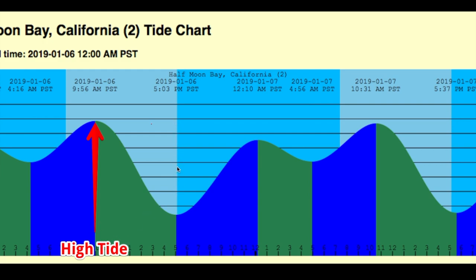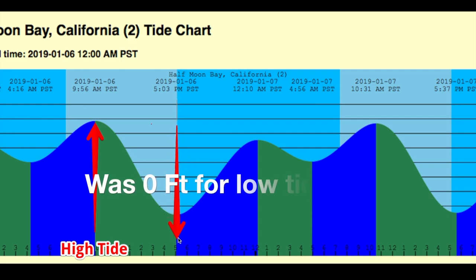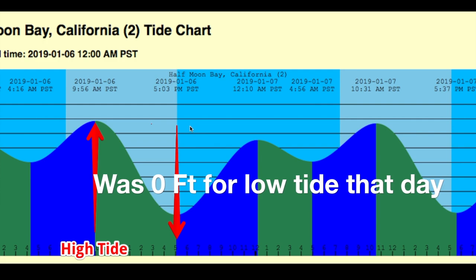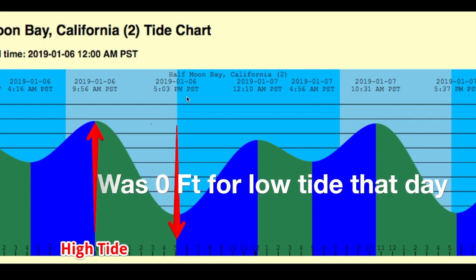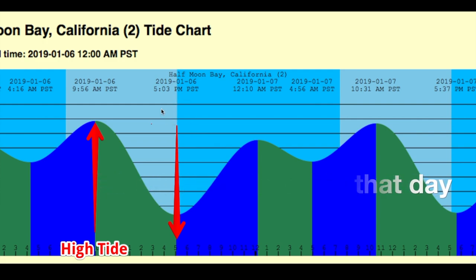And right here, looking down, this is going to be the low tide. That happens twice a day as well — some places three, but for the most part it's twice a day. Now that you see where the low tide is and high tide is, you can look at the times there.